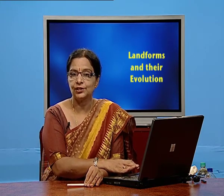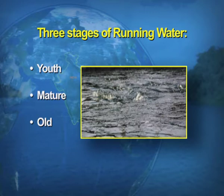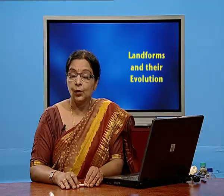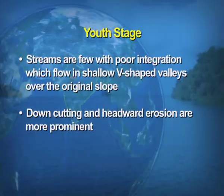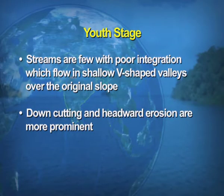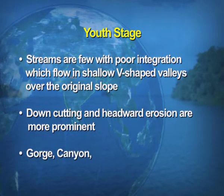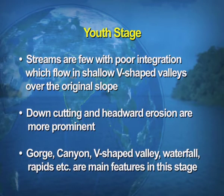First we take up the action of running water. There are three stages of running water, also called the river action. The river has three stages: the youthful stage, the maturity, and the old stage. In the youthful stage, streams are few with very poor integration, flowing in shallow V-shaped valleys over the original slope. Downcutting and headward erosion are more prominent. The main features formed are gorge, canyon, V-shaped valley, waterfall, rapids, etc.